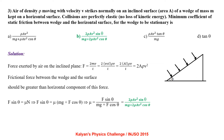The frictional force between the wedge and the surface should be greater than the horizontal component of this force. So F sin theta equals mu N, or F sin theta equals mu times (Mg plus F cos theta). From this we get mu equal to F sin theta divided by (Mg plus F cos theta), which is 2 rho A V squared sin theta divided by (Mg plus 2 rho A V squared cos theta).